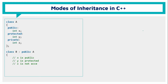For example, we have class A with a public integer x, protected integer y, and private integer z. Class B inherits from class A using public access mode. In public mode, x remains public and y remains protected in the subclass. The private member z is not accessible.